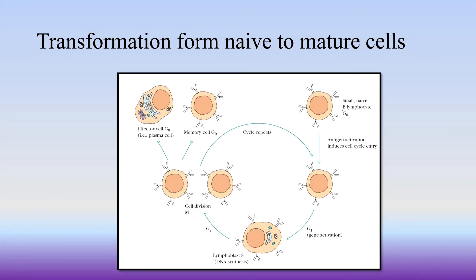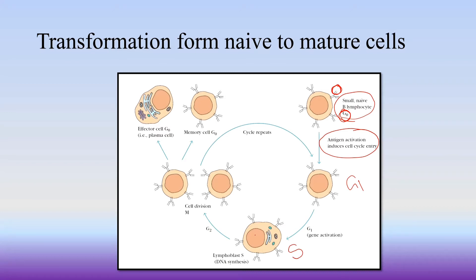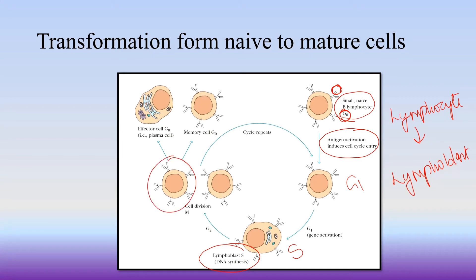A naive B-lymphocyte binds an antigen. The antigen binding activates the small lymphocyte. In G0 phase, antigen induction is triggered, moving into G1 phase, then S phase with DNA synthesis, forming a lymphoblast. The lymphoblast divides into two cells: an effector B cell that secretes antibodies, and a memory cell for future use.